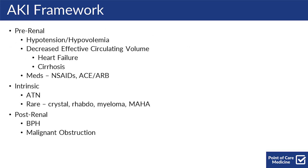For etiology and differential diagnosis, for your general AKI framework, think prerenal — this includes hypotension and hypovolemia. Other causes of prerenal physiology include a decreased effective circulating volume, secondary to mostly heart failure and cirrhosis. Meds that can also cause prerenal physiology are NSAIDs, ACEs, and ARBs.